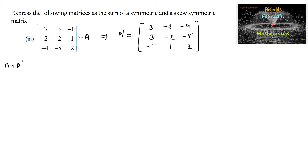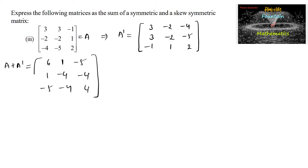So A plus A transpose, adding both matrices: 3+3=6, 3+(-2)=1, -1+(-4)=-5; -2+3=1, -2+(-2)=-4, 1+(-5)=-4; -4+(-1)=-5, -5+1=-4, 2+2=4. This is A plus A transpose.